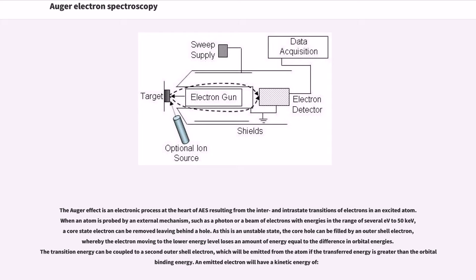The Auger effect is an electronic process at the heart of AES resulting from the inter- and intra-state transitions of electrons in an excited atom. When an atom is probed by an external mechanism, such as a photon or a beam of electrons with energies in the range of several eV to 50 keV, a core state electron can be removed leaving behind a hole. As this is an unstable state, the core hole can be filled by an outer shell electron, whereby the electron moving to the lower energy level loses an amount of energy equal to the difference in orbital energies.